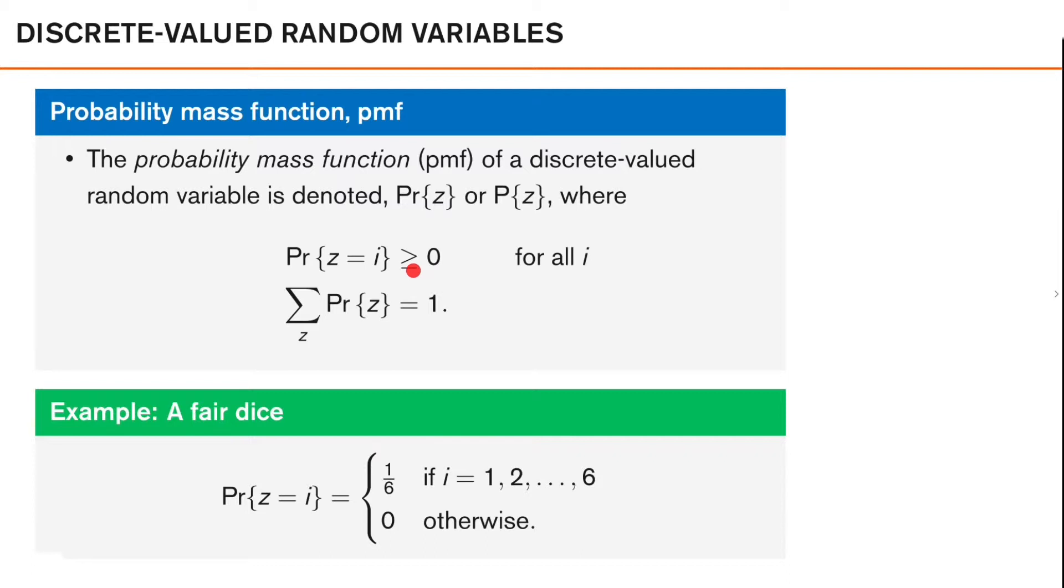Now, one way to view this value here is, if we collect many values of z, the fraction of these that are equal to i is given by this number here. And this needs to hold for all values of i. The second property of our probability mass function is that if we sum over all values of z, this sum needs to be 1. That is, the probability that z takes any value needs to be 1.